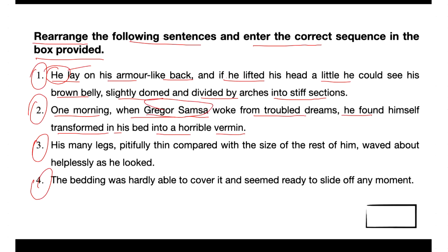As we know that a noun comes before a pronoun — this is the noun-pronoun relationship approach. So we can consider that sentence two may be the beginning one. Looking at sentence three: 'His many legs, pitifully thin compared with the size of the rest of him, waved about helplessly as he looked.' And sentence four says: 'The bedding was hardly able to cover it and seemed ready to slide off any moment.' Now we are sure that 'his,' 'him,' and 'he' all refer to Gregor Samsa.